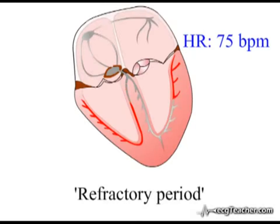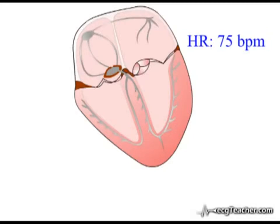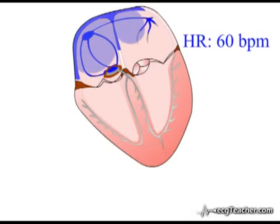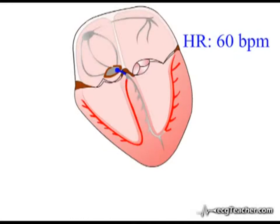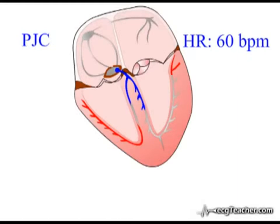The simplest example of this is seen in some cases of very early atrial or junctional premature contractions. In the example shown here, the heart is beating at 60 beats per minute. At this relatively slow heart rate, the refractory period of the bundle branches is prolonged, and the difference between the refractory periods of the right and left branches is appreciable. At this point, a focus within the junctional region has discharged, generating a premature junctional contraction. However, the premature discharge has occurred at a time when a region of the right bundle branch is still in a state refractory to transmission of depolarisation.